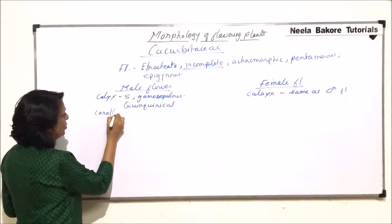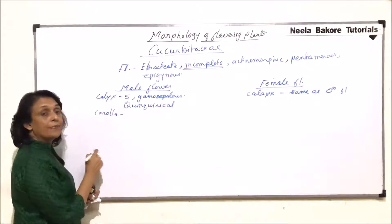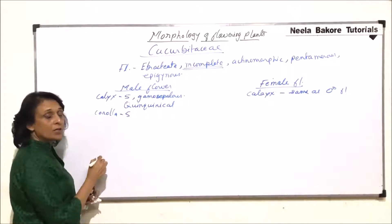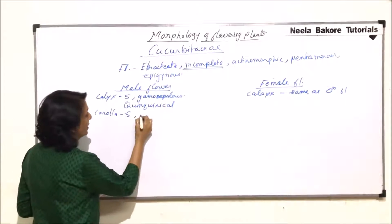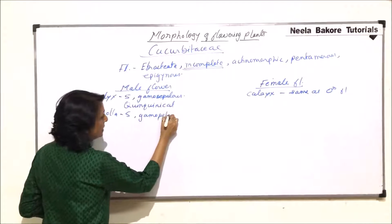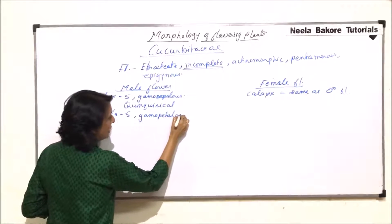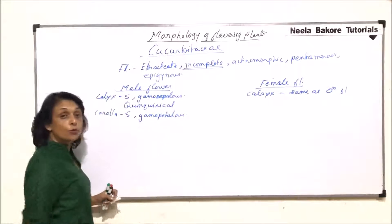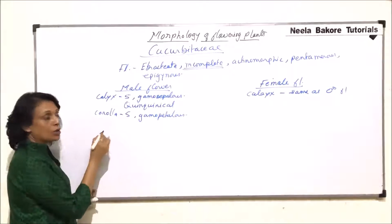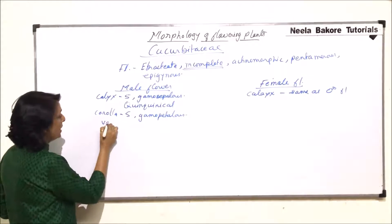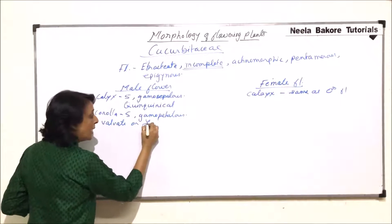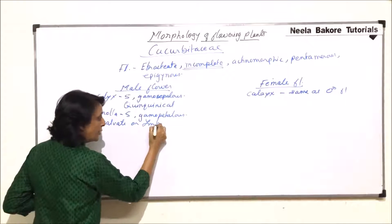Coming to the corolla, there are five petals and they are gamopetalous, meaning fused. The aestivation can be valvate or imbricate.